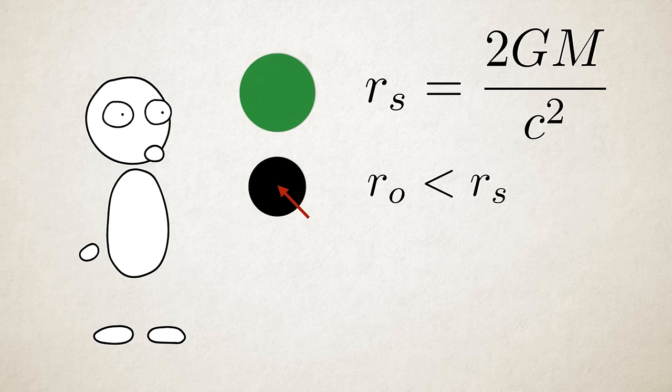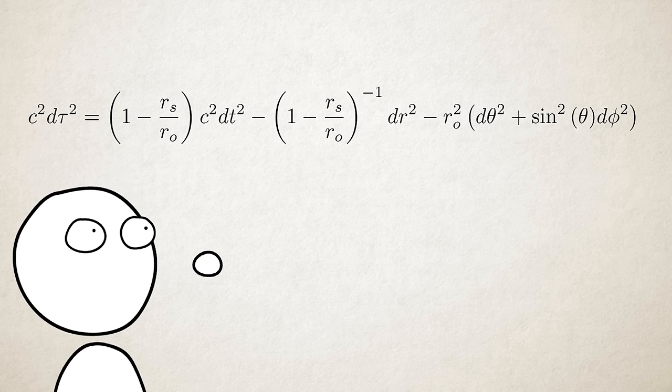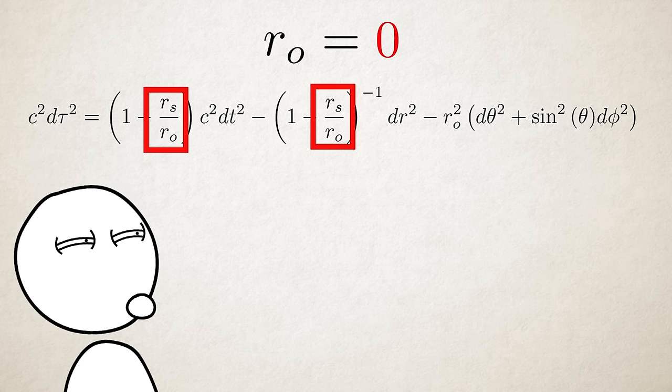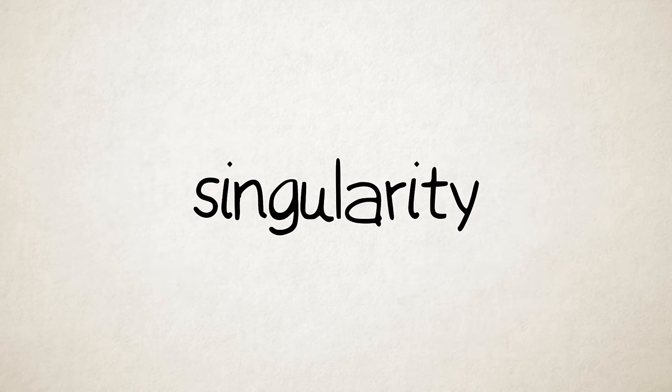But what happens at the center? In other words, what happens if the object's radius is zero? This equation defines the shape of space-time near a spherical mass. Now, you don't need to understand all of it. Just have a quick look and see if you can spot the problem. Congratulations, you just broke physics by creating a singularity.